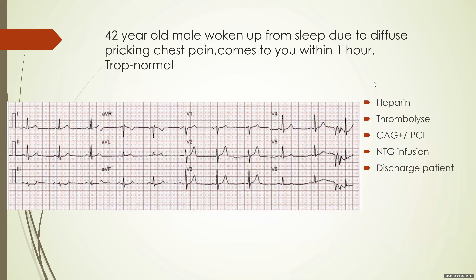However, diseases don't read textbooks. Let's take an example: a 42-year-old male who was woken up from sleep due to diffuse pricking chest pain and comes to you within one hour. His troponin is normal. A patient woken from sleep due to chest pain — you take that pain to be cardiac unless proven otherwise. Diffuse chest pain in the anterior chest occurring for the first time is also taken as cardiac. The troponin is expected to be normal because it often takes three to four hours to elevate — troponin is unreliable early in the course of chest pain.